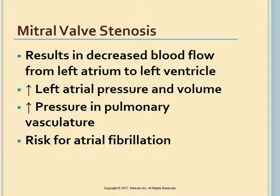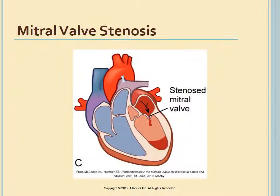These deformities block blood flow and create a pressure difference between the left atrium and the left ventricle. As a result, left atrial pressure and volume increase, causing higher pulmonary vasculature pressure. The overloaded left atrium places the patient at risk for atrial fibrillation. The stenosed valve is unable to open sufficiently during systole, inhibiting left ventricle filling.